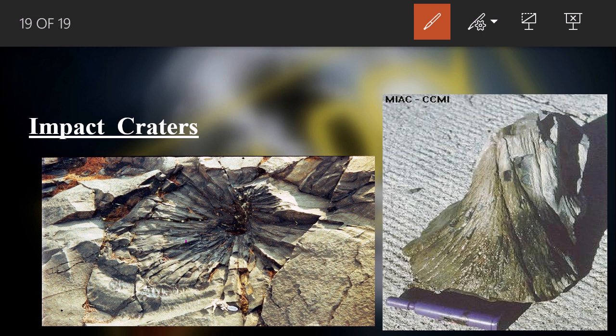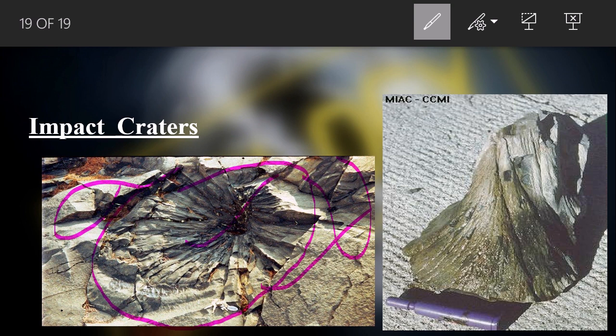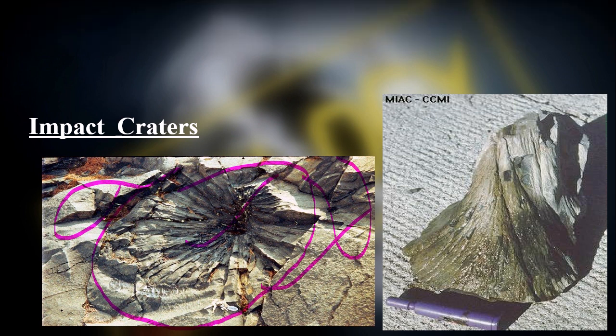Extreme temperatures of around 1500 to 1700 degrees Celsius are reached. A key diagnostic feature is the shatter cone — the apex points in the direction from where the object came. There are also impact breccias along the crater, and strong structural disturbance around the rim with undeformed rock below.